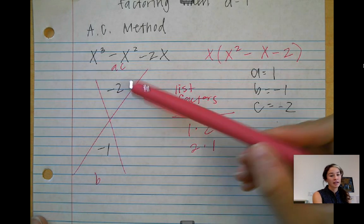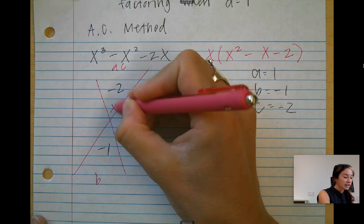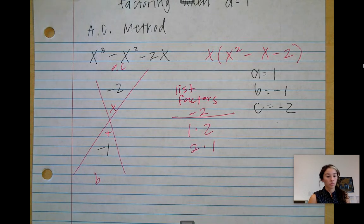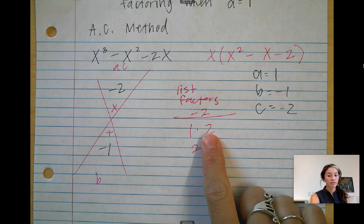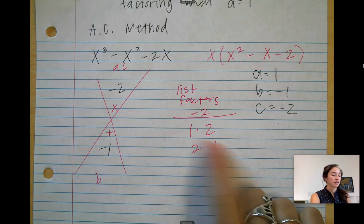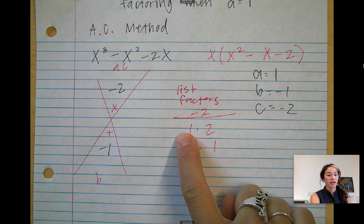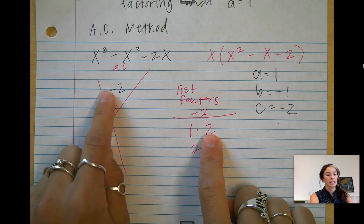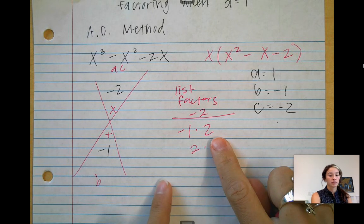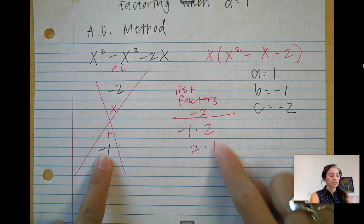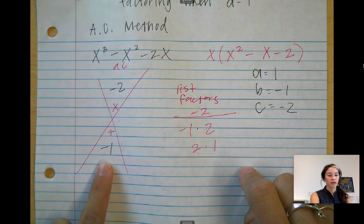Now we want it to multiply to a negative number and then add to a negative 1. So in order to multiply to a negative number, one of these has to be negative. So say we do negative 1 times 2, we get negative 2. If we were to add those, we'd get positive 1, not negative.